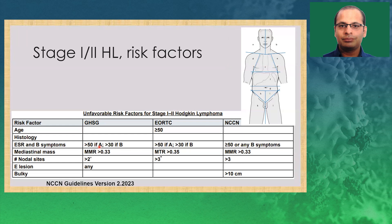For early stage disease, certain classification systems are used to identify favorable risk factors for stage 1 and 2 Hodgkin lymphoma. Three systems are used: the German Hodgkin Study Group (GHSG), EORTC, and NCCN. Common parameters include ESR, B symptoms, mediastinal mass, and nodal sites. GHSG adds extralymphatic sites, EORTC adds age, and NCCN adds bulky disease. Nodal site counts differ slightly across all three classifications, so it's important to be consistent and follow one classification throughout.